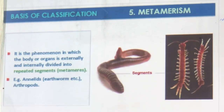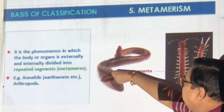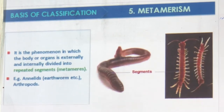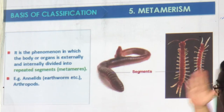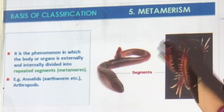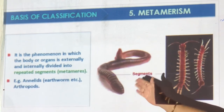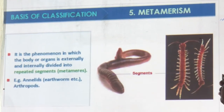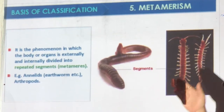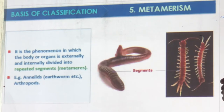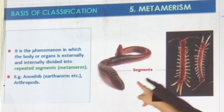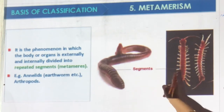What is metamerism? Look at an earthworm — you will see all these segments. Look at a centipede — you will see segments. But if the segmentation goes right inside, like a local train where everything is repeated, then it is a true segment called metamerism. If segments are only outside — like a pattern on Harris cloth — but not divided inside, that is not true metamerism. Example: earthworms and arthropods.